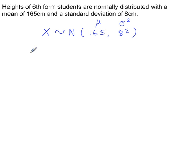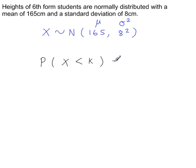Let's say the probability that a randomly selected student has a height less than some unknown value k centimetres is equal to 0.82. So there's a specific height where the probability that a randomly selected student falls below it is 82%.